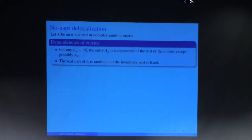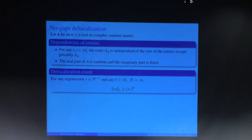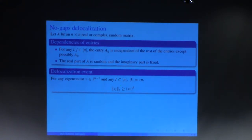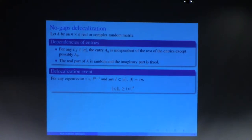What we are striving to establish is the delocalization property: namely that for any unit eigenvector and for any set of coordinates of size epsilon*n, the L2 norm falling on these coordinates is polynomial in epsilon. The power of 6 we get here is not optimal by any means, but we want to get a polynomial dependence.